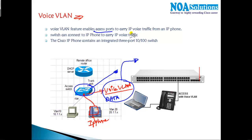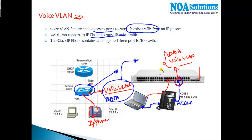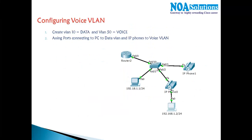Voice VLAN enables access ports to carry IP voice traffic from an IP phone connected on the LAN. A Cisco IP phone contains an integrated three-port switch: one port connects to the network switch like a normal access port, and another port connects to a computer. That single switch port can be a member of both the voice VLAN and the data VLAN simultaneously, allowing both PC traffic and voice traffic on the same port.